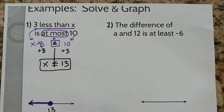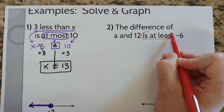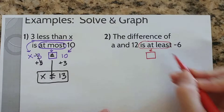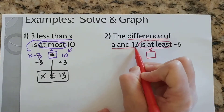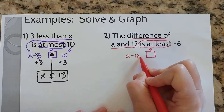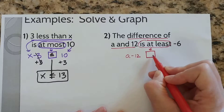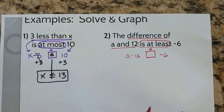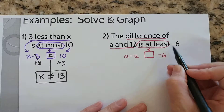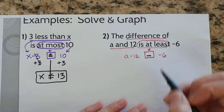Go ahead and read the sentence and circle the words that represent the inequality. Yep, "is at least." So there's our inequality. I'm going to put a little box here — I'll put the inequality in there in a minute. We have the difference of a and 12. The difference means to subtract, so the difference of a and 12 is a minus 12. Is at least — that goes there — negative 6. So it says "is at least," meaning it is at the very least negative 6. So it could be equal to negative 6, but that's the very least. So I'm going to put an equal to in there.